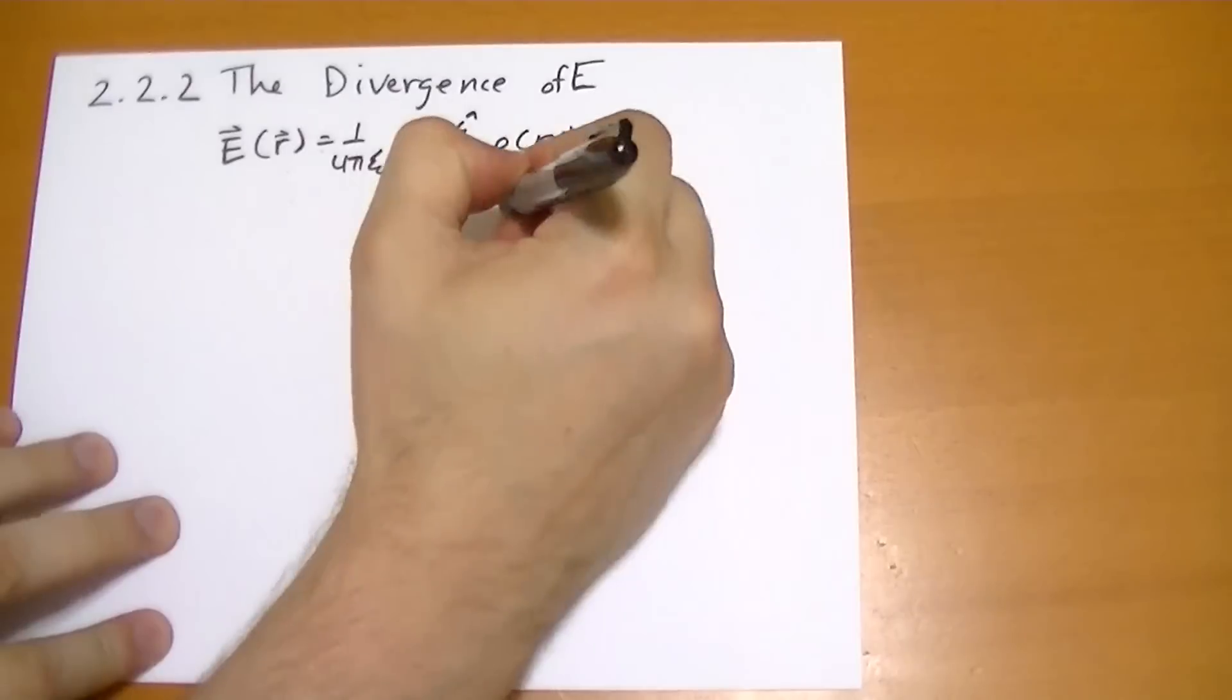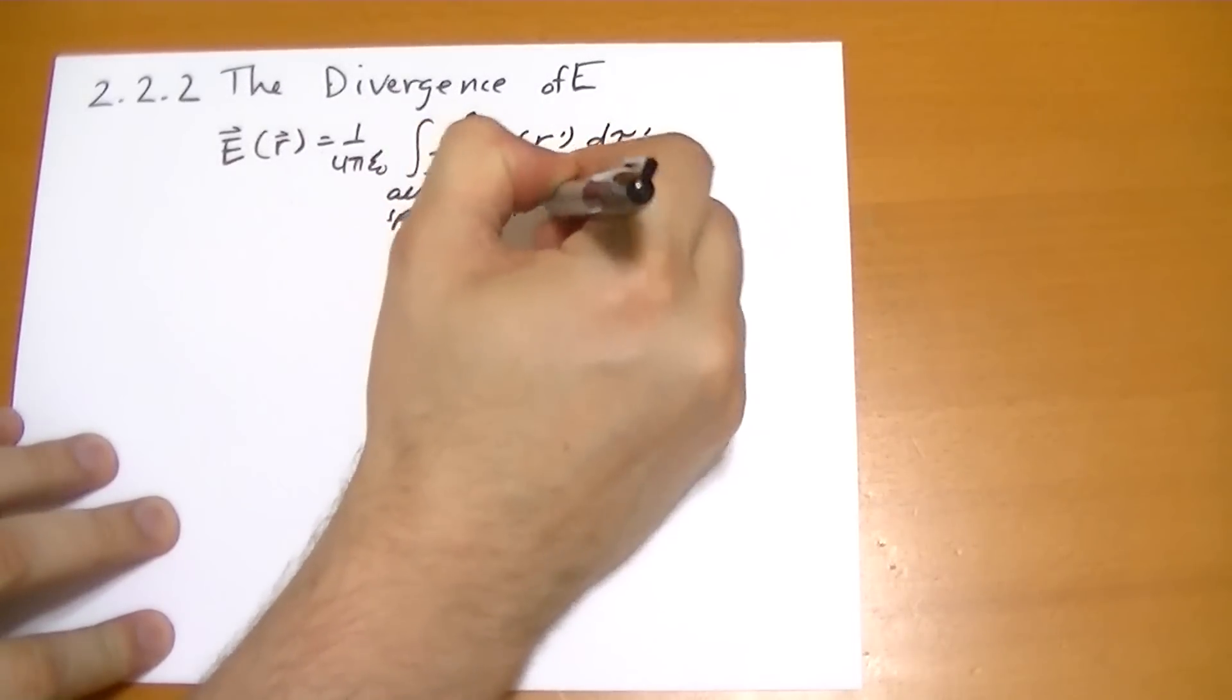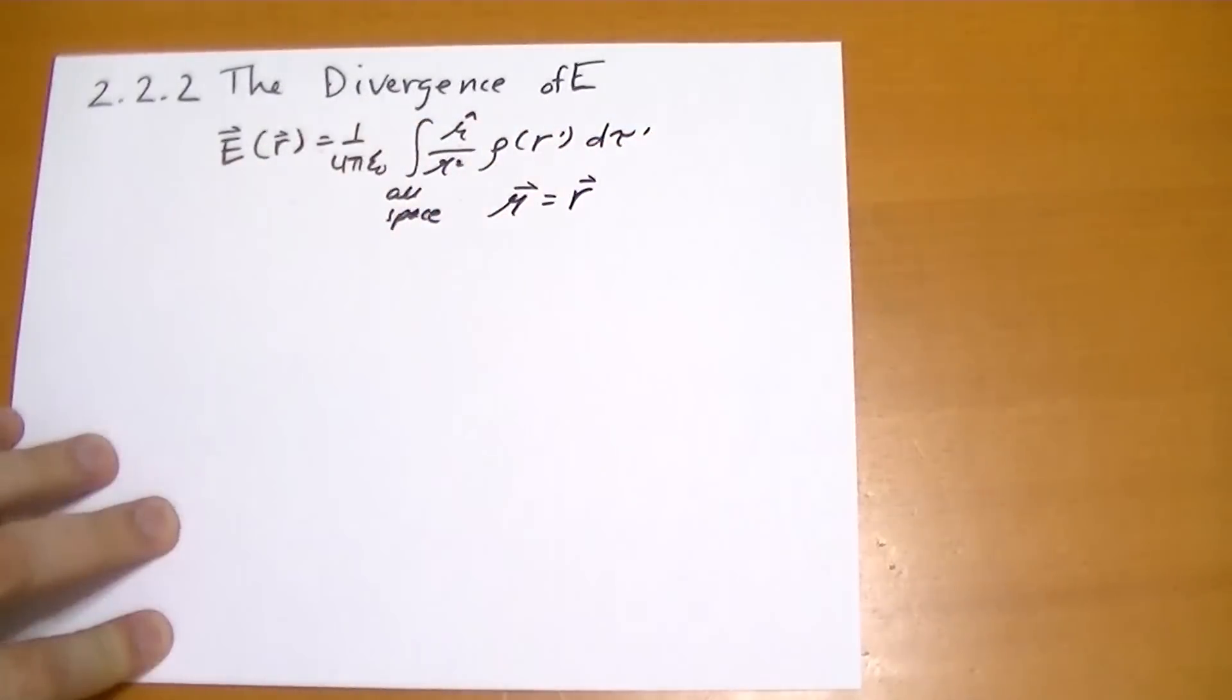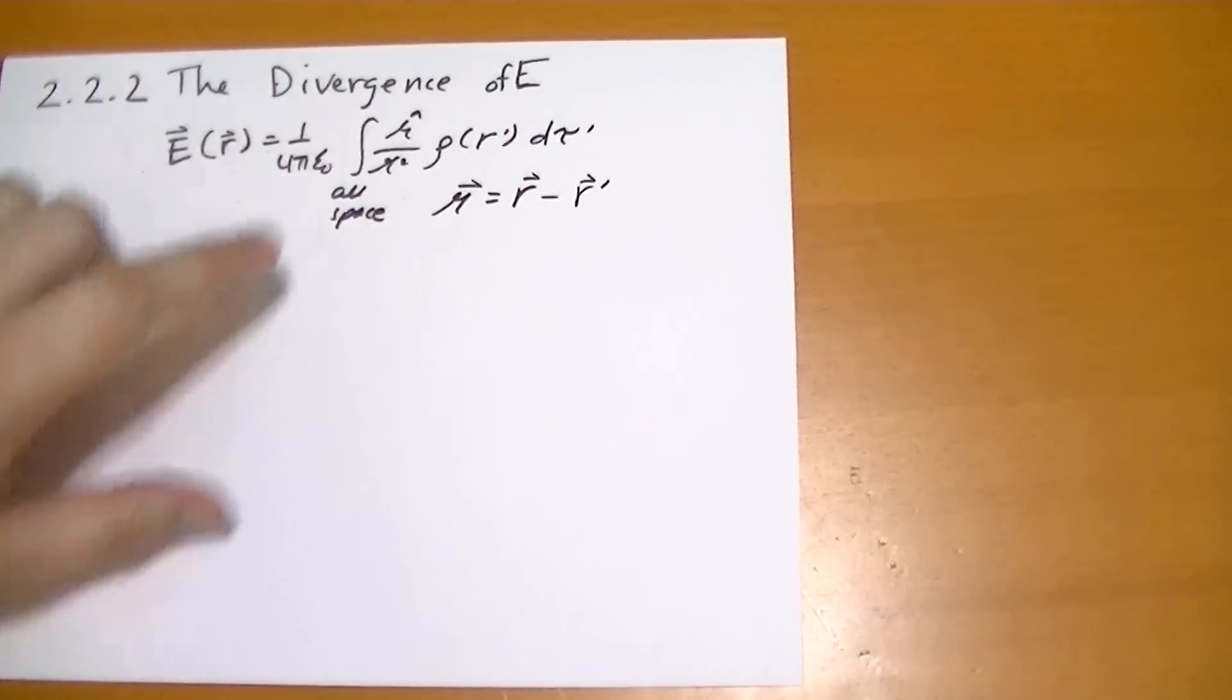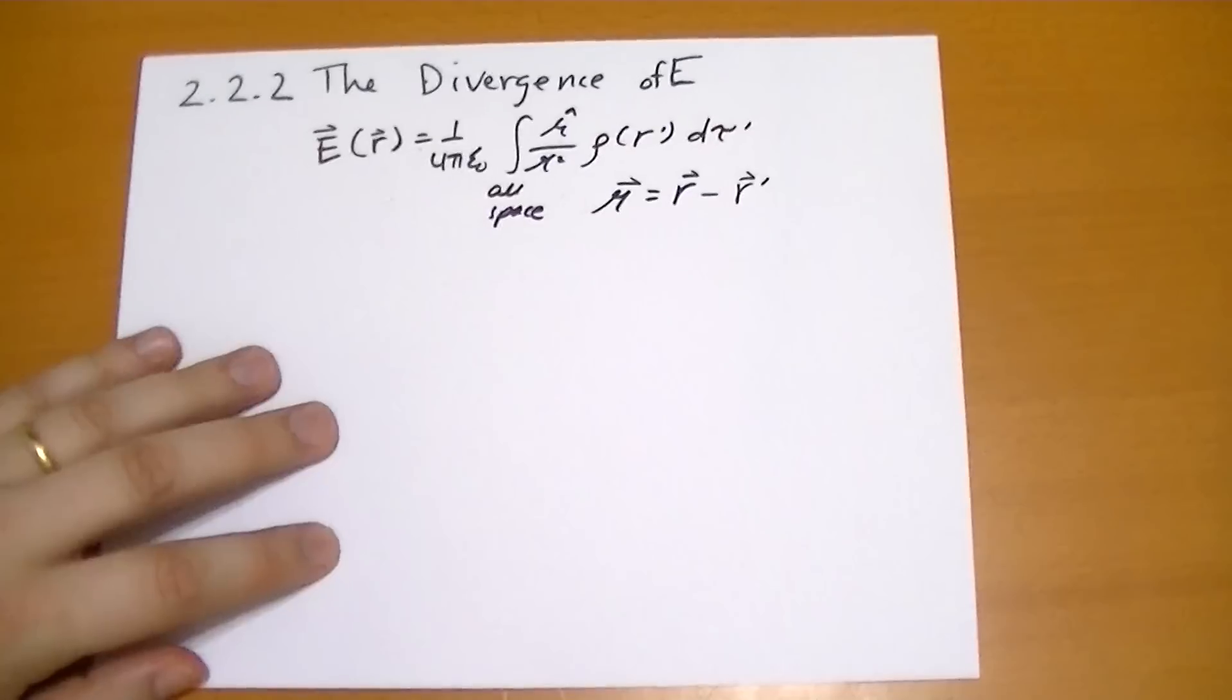And just remind yourself that, in this case, script r vector is going to equal the r-vector that we're calculating the electric field for, minus the r-prime vector, which is the point that we're currently integrating for the integral.